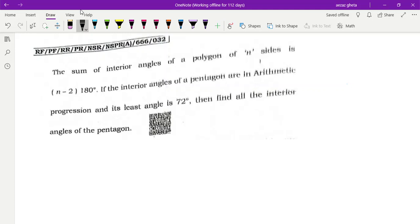The formula is n minus 2 into 180. If the interior angles of a pentagon are in AP and the least angle is 72 degrees, find all the interior angles. This is a four mark question.